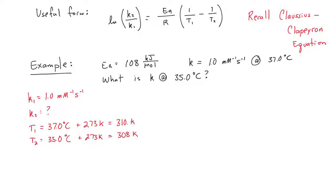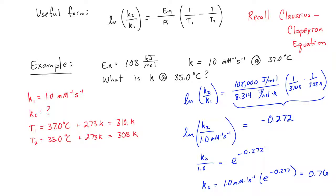So to solve this one, we are going to plug in all the variables and solve the equation for K2. After solving this one, we can see that the new rate constant at 35 degrees Celsius is 0.76. That number is less than the rate constant at 37 degrees Celsius, which is exactly what we'd expect.